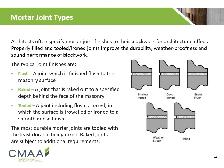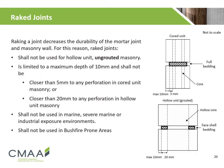Rake joints are subject to additional requirements. Raking a joint decreases the durability of the mortar joint and masonry wall. For this reason, rake joints shall not be used for hollow ungrouted masonry, are limited to a maximum depth of 10mm, and shall not be closer than 5mm to any perforation in cored unit masonry, or closer than 20mm to any perforation in grouted hollow unit masonry. Rake joints shall not be used in marine, severe marine or industrial exposure environments, or bushfire prone areas.